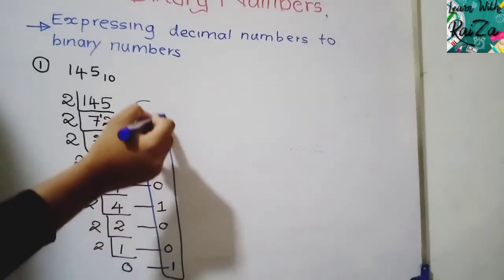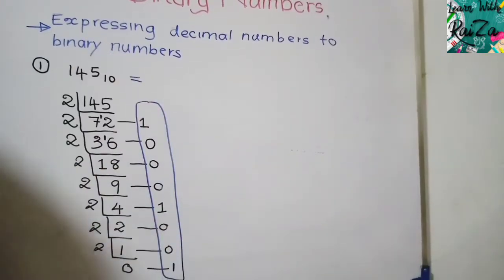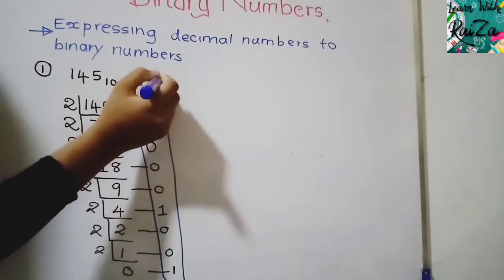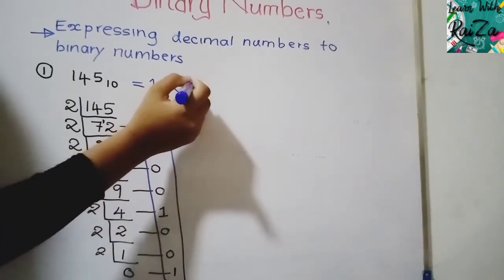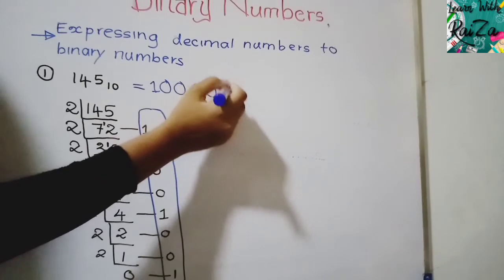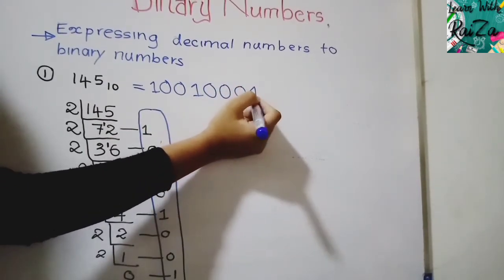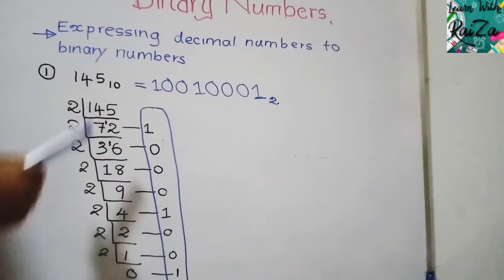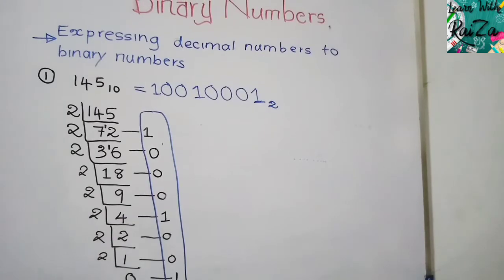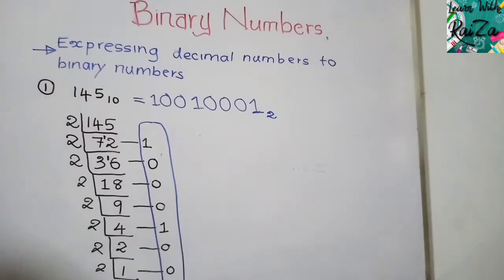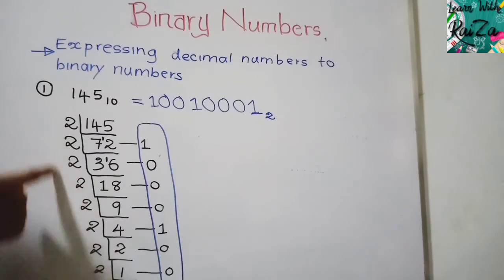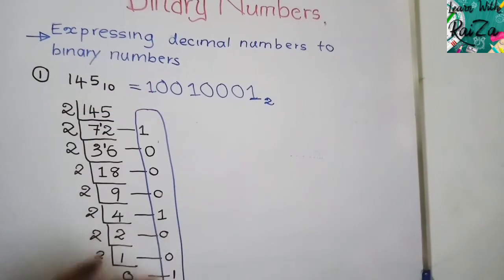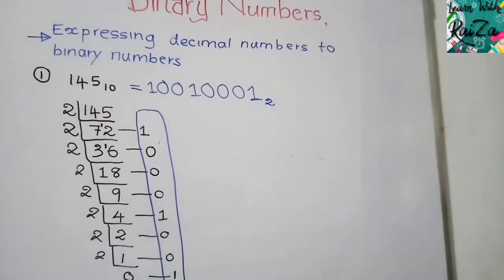Now consider the remainders on the outside. The binary form is written from bottom to top: 1, 0, 0, 1, 0, 0, 0, 1 to the base 2. Binary numbers are base 2 and decimal numbers are base 10. We continuously divided by 2, and the remainders read from bottom to top give the binary value.